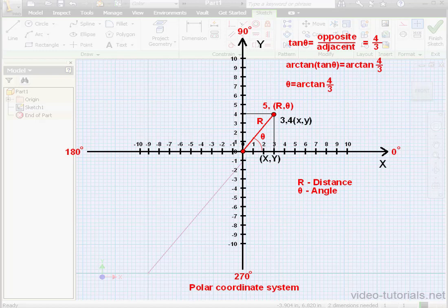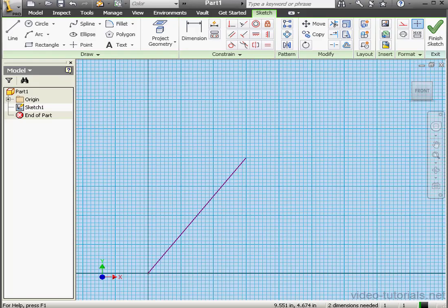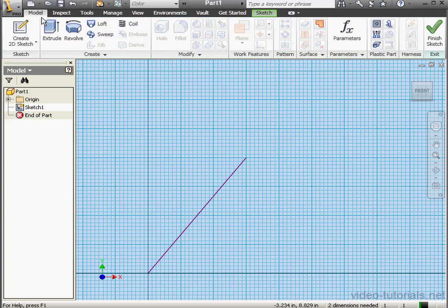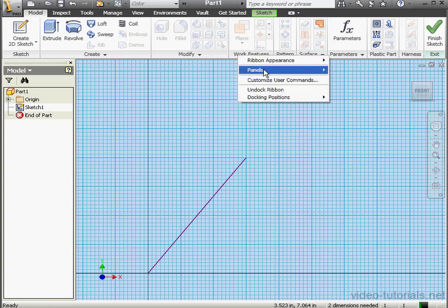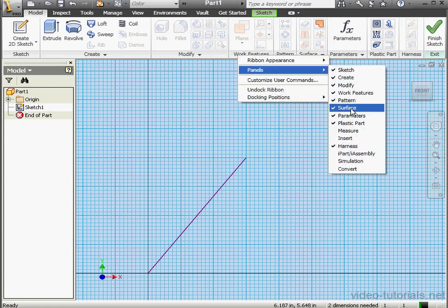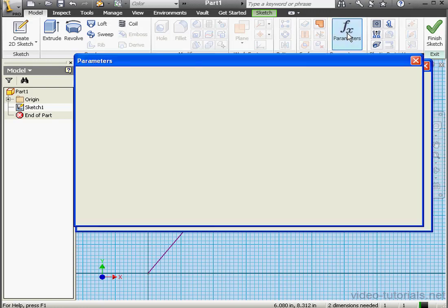In order to figure out the angle, we're going to use the Inventor Parameters window. Let's exit my diagram and go to the Model tab. Click on Parameters. If you don't see Parameters, just right-click anywhere on the ribbon, scroll down to Panels, and select Parameters from the list of available panels.